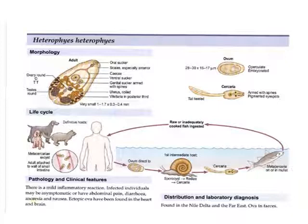The life cycle can start when the human discharges ova into the environment. The ovum is then liberated and can infect the first intermediate host — the snail — known as miracidium, which hatches and enters the first intermediate host snail. It undergoes sporocyst, rediae, and cercariae stages, and the cercariae leave the first intermediate host to enter the second intermediate host, which is fish. After fish eating or ingestion, the human can get the infection. Raw or inadequately cooked fish ingested by the definitive host — the human — causes infection.